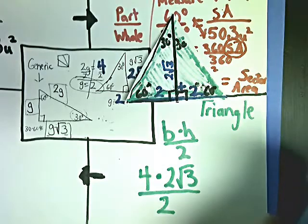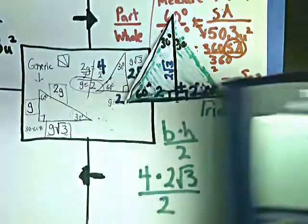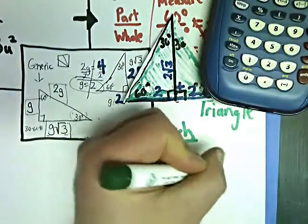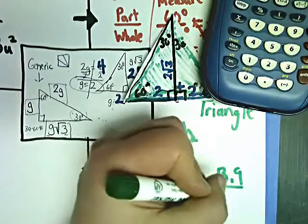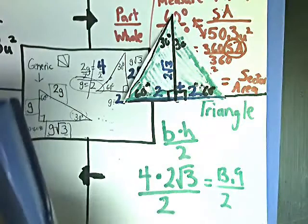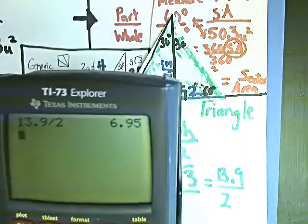So I'm going to do 4 times 2 square root of 3. 13.85. So 13.9. And I'm going to divide that by 2. 6.95 or 7.